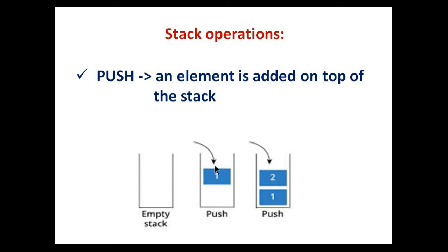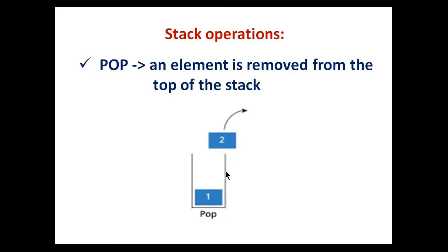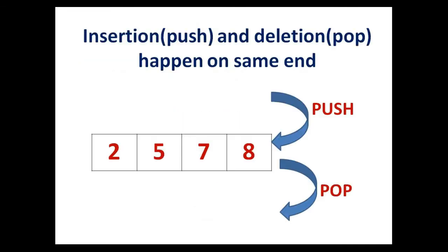One item is pushed and the second item is pushed on top of it. Next is pop. Pop means removal of an item from the top. Here you can see an element is removed from the top of the stack. Next we will see implementation of stack using list. In a stack list, push and pop happen on the same end, and that end we will consider as the top.